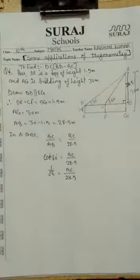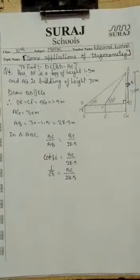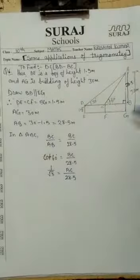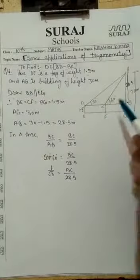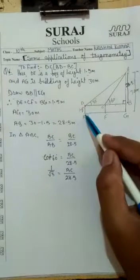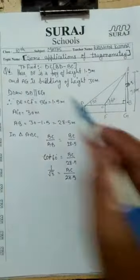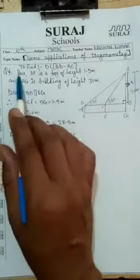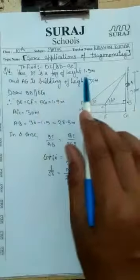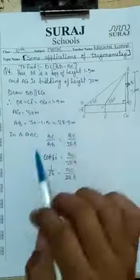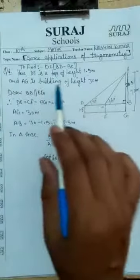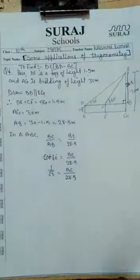The statement says that a 1.5 meter tall boy is standing at some distance from a 30 meter tall building. Here, AG is the 30 meter tall building, and at some distance from it, DE is the boy standing. BD is the boy of height 1.5 meter, and AG is the building of height 30 meter.